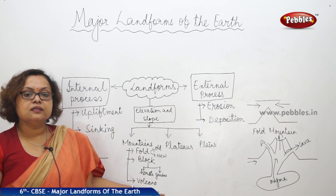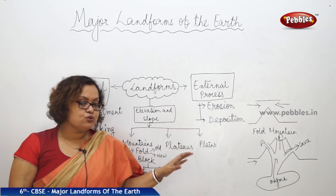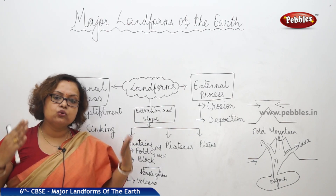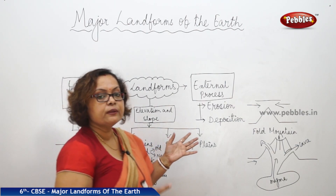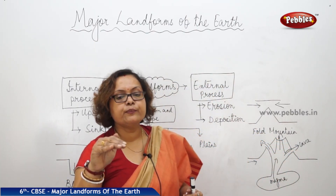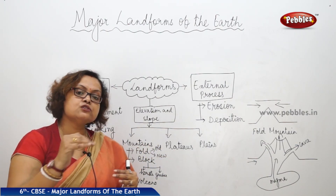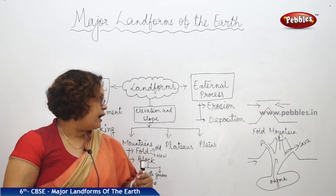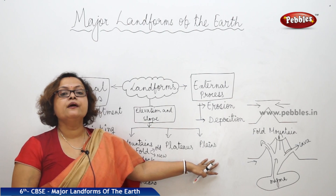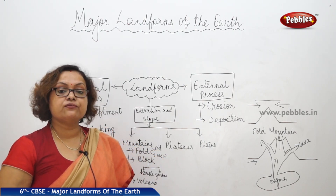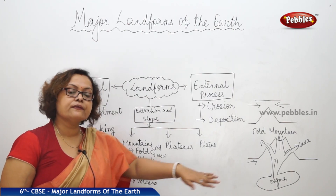Plateaus have a flat region with elevation higher than plains. Plains are formed mainly by river deposition of alluvial soil, with elevation not more than 200 meters from mean sea level. Plains are very good for agriculture and are thickly populated because of agricultural facilities and the easy availability of basic amenities of life.